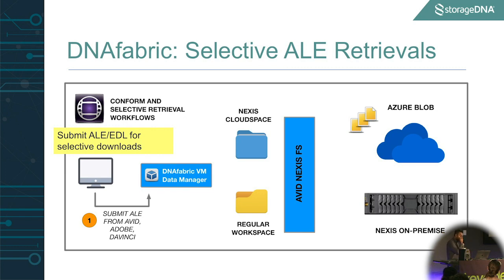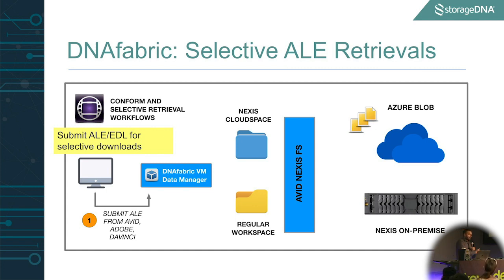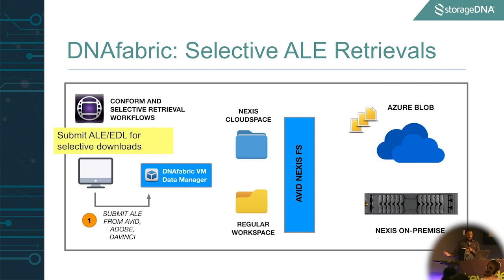The third feature is actually the most interesting one — our ability to let you selectively bring clips back from the cloud. Say you come back into your edit bay with an offline project, and you need a specific bin or sequence back. You can tell Fabric: here's an ALE export of what I want to bring back — maybe one clip, maybe three, maybe a sequence. Fabric then identifies the media files associated with that clip sitting in cloud space and does a selective download back into your local workspace. This is significant because we are now minimizing your egress cost, which is going to be one of the highest costs if you are adopting any cloud storage.